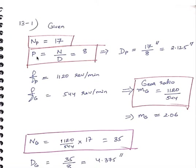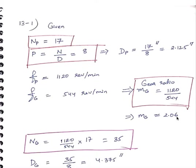NP, the number of teeth of the pinion, is 17. The diametrical pitch, defined as the number of teeth divided by the pitch circle diameter, is equal to 8. So the pitch circle diameter for the pinion dp equals 17 divided by 8, or 2.125 inches. The rotational speed for the pinion is 1120 rpm and for the gear is 544 rpm. The gear ratio is 1120 divided by 544, which is 2.06.